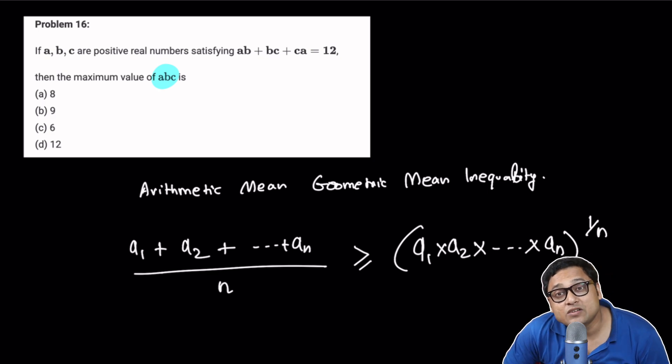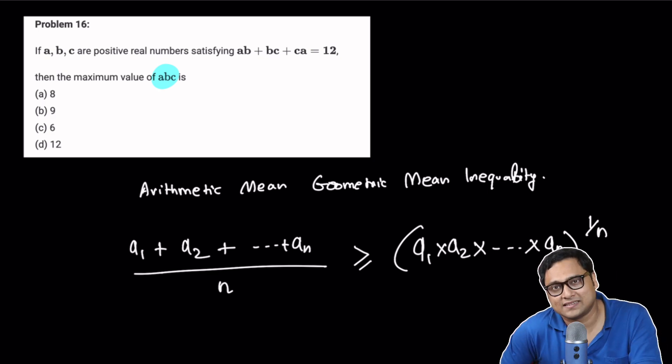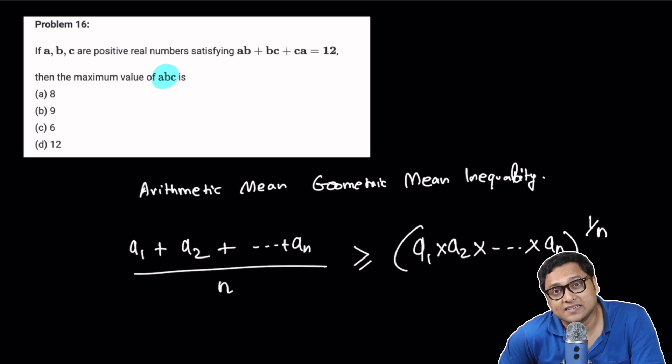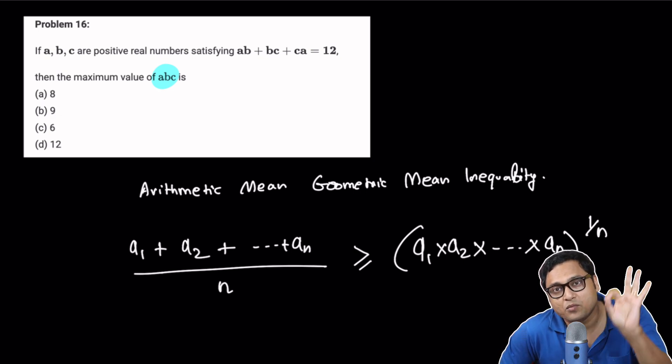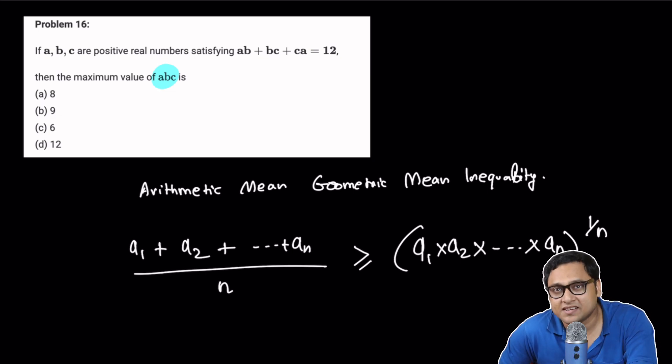And that equality happens when all the numbers are actually equal. A1 is equal to A2 is equal to A3 is equal to A4 and so on. All the numbers are equal.